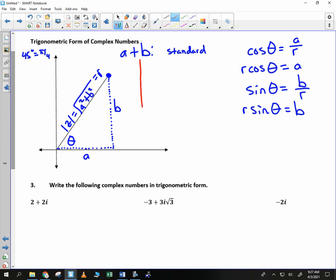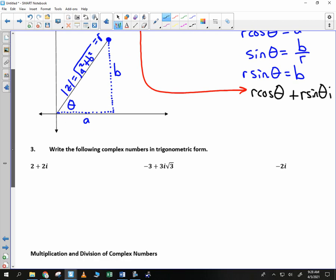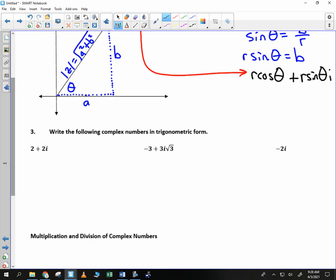That means if I want to take this guy and bring it down here, notice instead of writing a, I write r cosine of theta plus, and instead of b, I write r sine of theta times i. They both have an r, don't they? So I'm going to do the last step, which is to factor r out, cosine of theta plus, and so that we don't think that the i belongs with the theta, we're going to write i times the sine of theta.